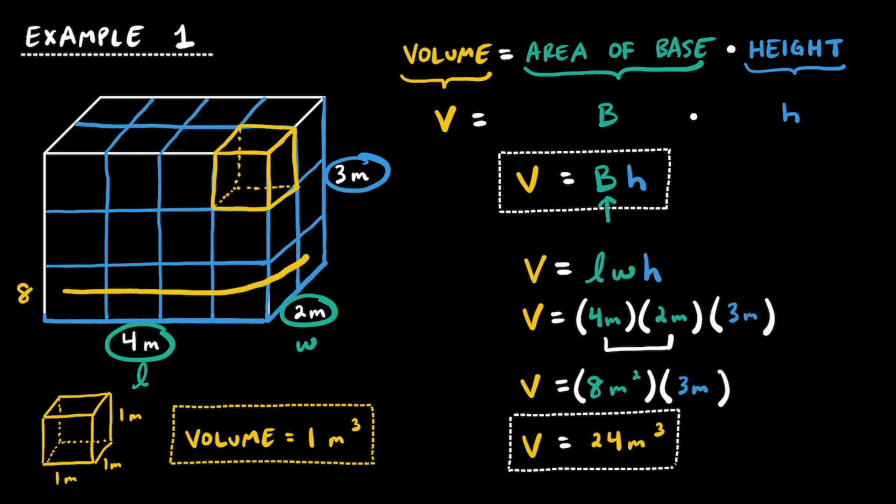Hopefully that makes sense, because we have 8 cubes on the first layer, 8 cubes in the middle layer, and 8 cubes on the top layer. And all together, that's 24 unit cubes.